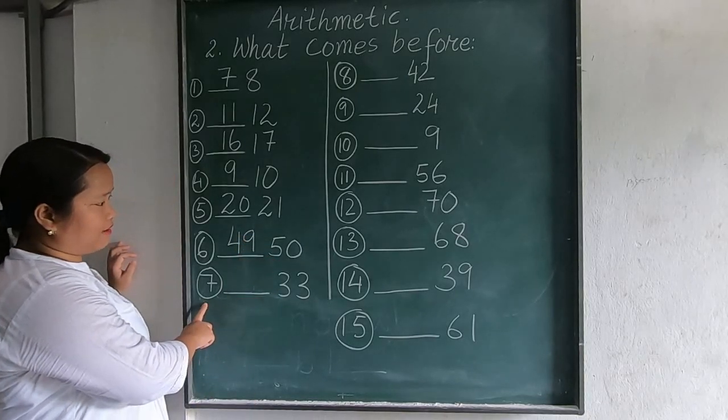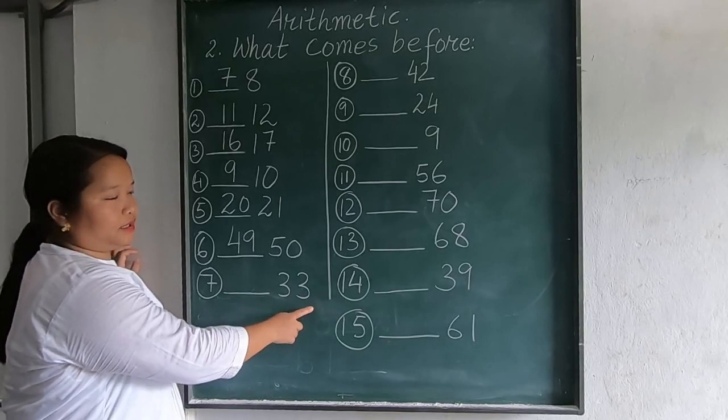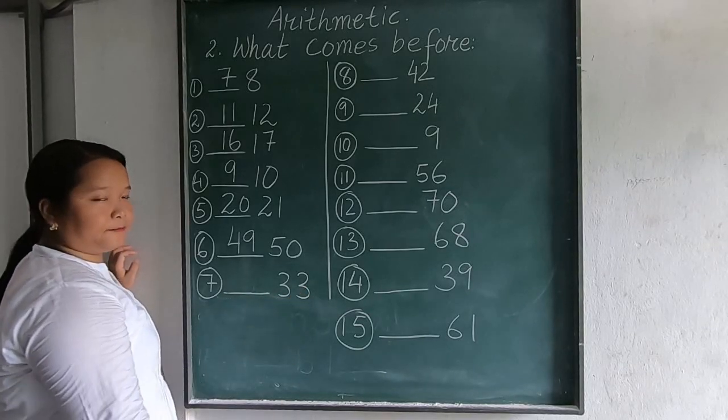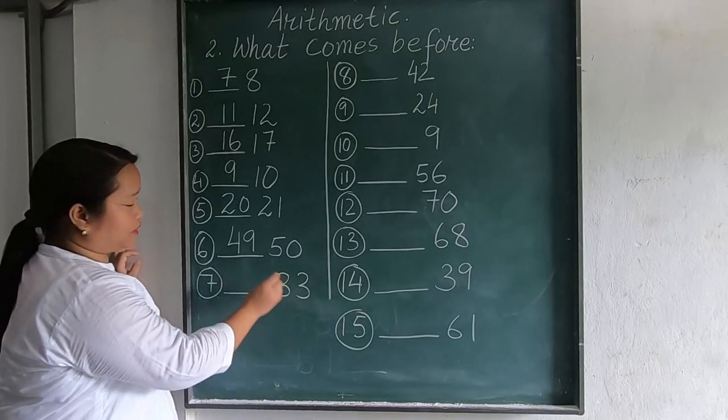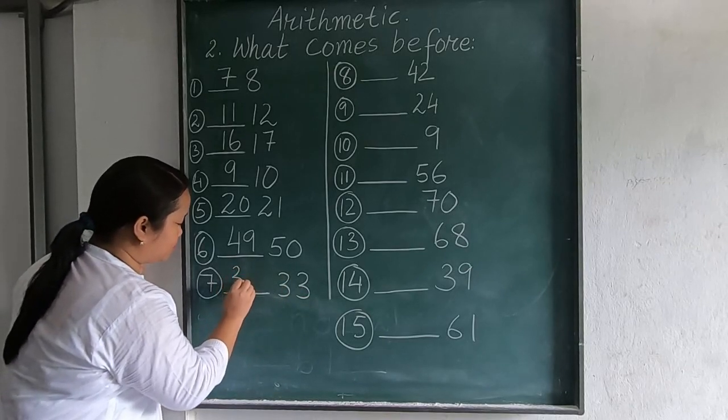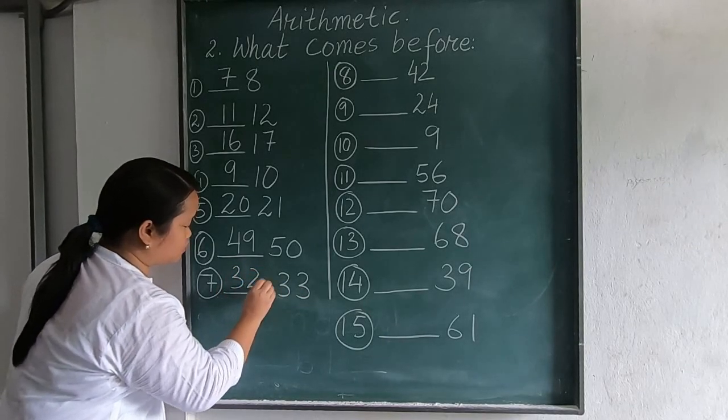The next question number 7, 33. So before 33, before 33, there is 32.